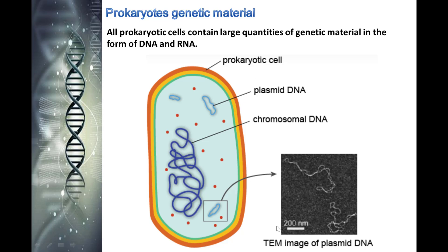Here we see a TEM image — TEM stands for transmission electron micrograph — of plasmid DNA. Many prokaryotic cells contain small pieces of DNA called plasmids. These circular rings of DNA are replicated independently of the chromosome and can be transferred from one prokaryotic cell to another through pili. Chromosomal DNA tends to look like a mass of string in the middle of the cell.